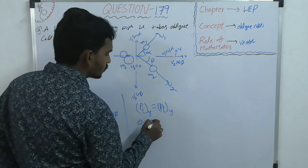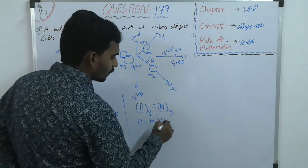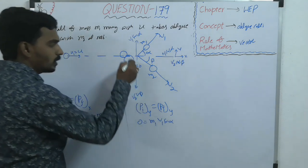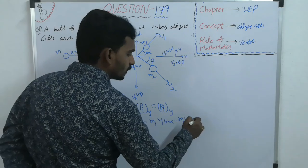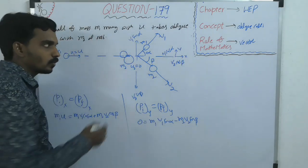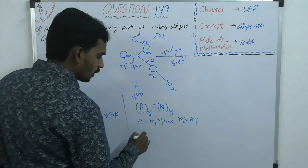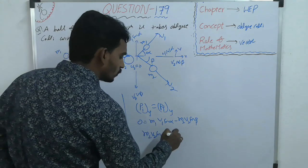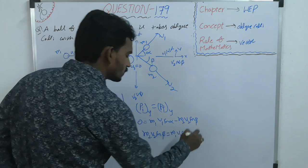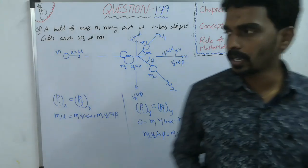if you consider M1 is moving up with V1 sin alpha, but M2 is having downward, so minus, because opposite direction. So one is positive means other is negative. So you will get M2 V2 sin beta equal to M1 V1 sin alpha.